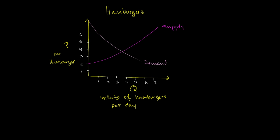Let's look at the market for hamburgers. This is the supply and demand curve for the price and quantity of hamburgers sold per day. If we have a completely unfettered market — no intervention, no taxes, nothing like that — then we have an equilibrium price and an equilibrium quantity.